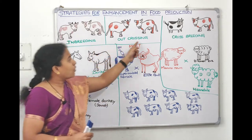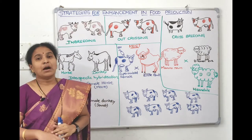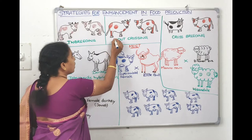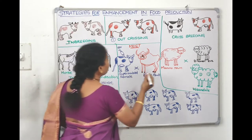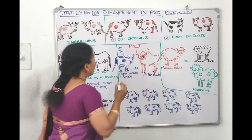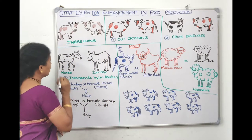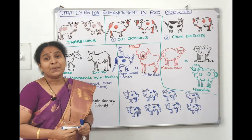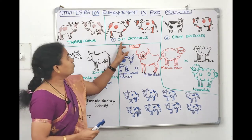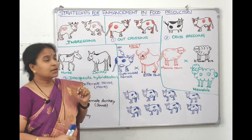The opposite of inbreeding is outbreeding. Outbreeding is of three types: the first type is outcrossing, the second type is cross breeding, and the third type is inter-specific hybridization.